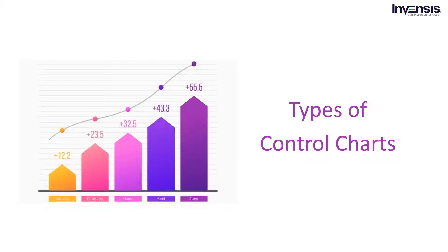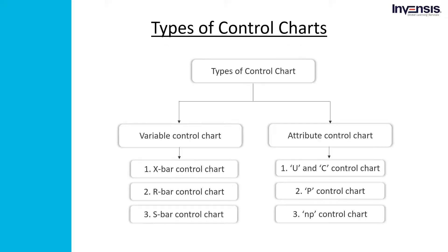Control charts typically fall into two categories based on whether the data being monitored is attribute or variable. Under variable control charts, there are three subcategories: X-bar control chart, R-bar control chart, and S-bar control chart. Under attribute control charts, there are also subcategories: U and C control charts, P control chart, and NP control chart.